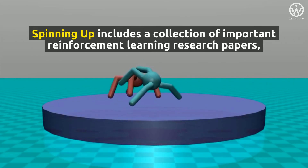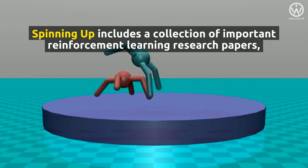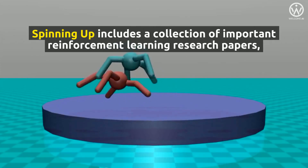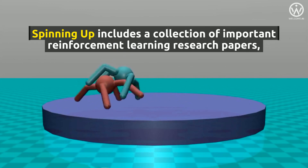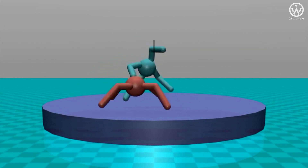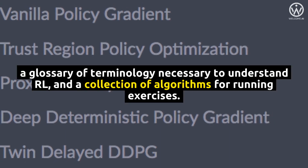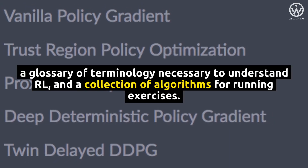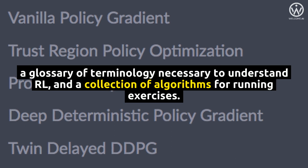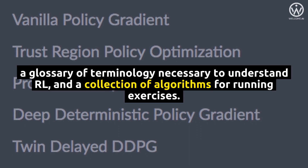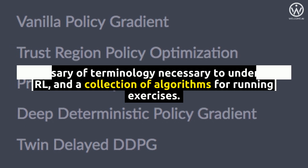Spinning Up includes a collection of important reinforcement learning research papers, a glossary of terminology necessary to understand RL, and a collection of algorithms for running exercises.